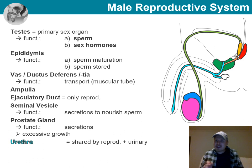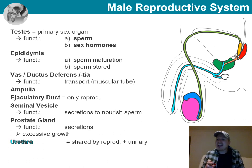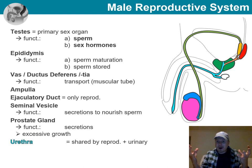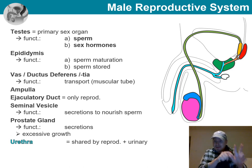Continuing our journey, the remaining duct carrying sperm and all added secretions is now called the urethra. We now have semen — a mixture of sperm and secretions — rather than just sperm. From our chapter on the urinary system, we may recall that there are three regions of the male urethra: prostatic urethra, membranous urethra, and spongy urethra.